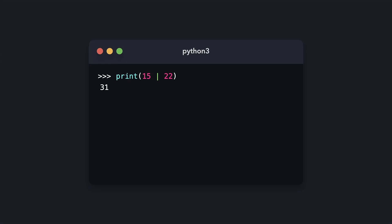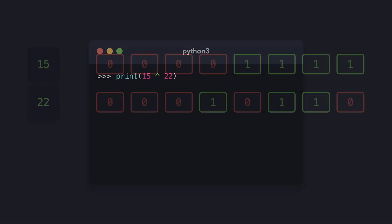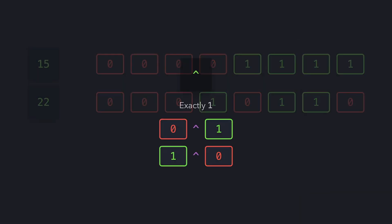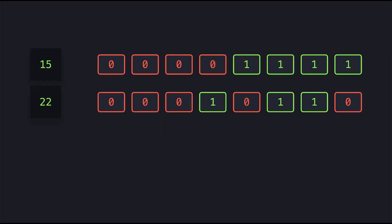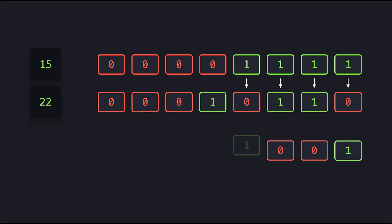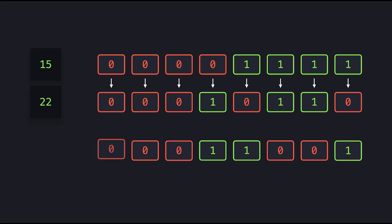The next bitwise operator is the exclusive OR (XOR) operator. This operator returns 1 if only one of the bits is 1. If both of them or neither is 1, it returns 0. This means: 1 XOR 0 returns 1, 1 XOR 1 returns 0, 1 XOR 1 again returns 0, 1 XOR 0 returns 1, and 0 XOR 1 returns 1. These bits represent the integer 25.